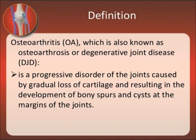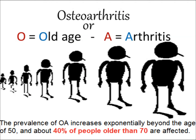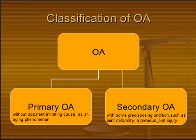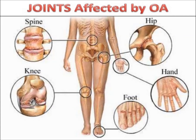Osteoarthritis is an old age arthritis and its prevalence increases with age. 40% of people older than 70 years of age are affected. It has two main varieties: primary osteoarthritis and secondary osteoarthritis. In primary osteoarthritis, the cause is the aging phenomenon. In secondary osteoarthritis, there is previous joint injury or joint deformity.